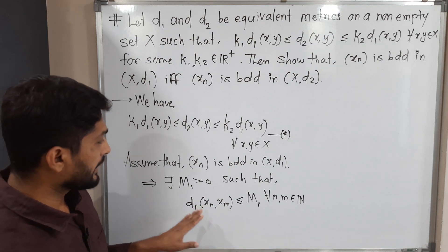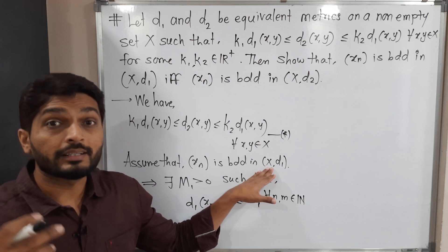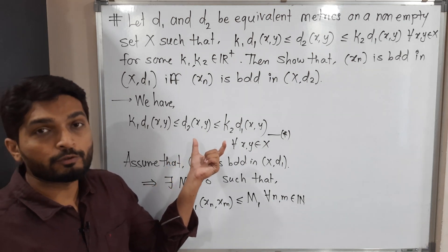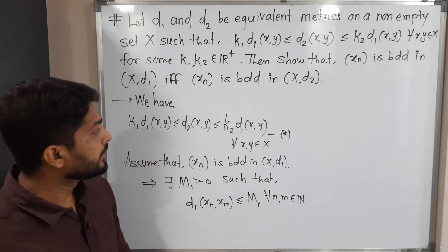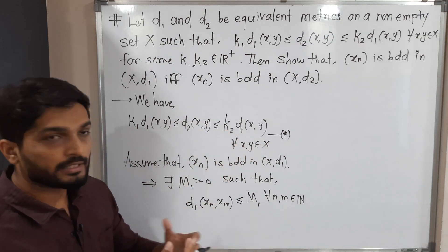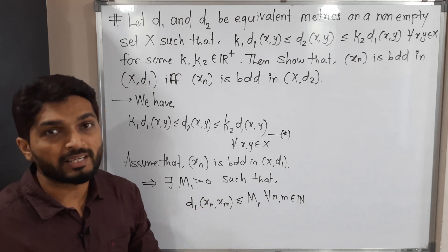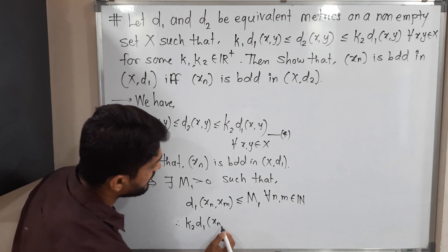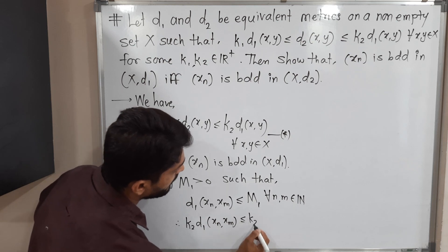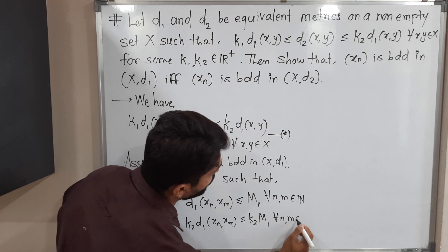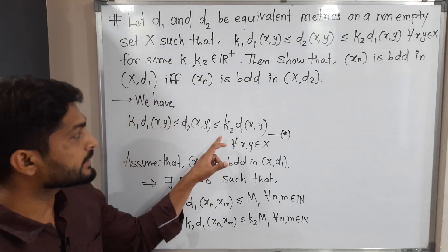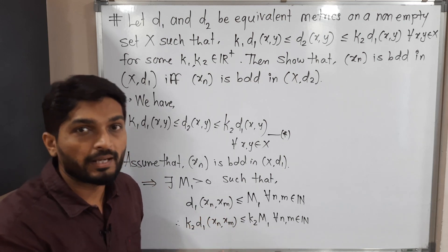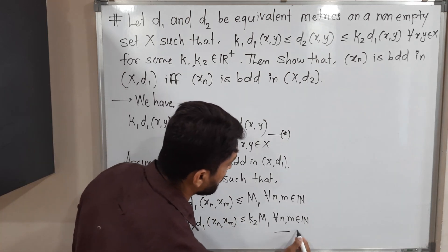Our target is to prove the sequence is bounded in (X, d2), meaning we need to bring d2 into the picture. From the given information you can see d1(x,y) appears with k2 as a multiple, so I will multiply both sides by k2. Thus: k2·d1(xn, xm) ≤ k2·m1 for all n, m belonging to the set of natural numbers. Since k2 is a positive real number, the inequality is maintained. Let me call this inequality number one.